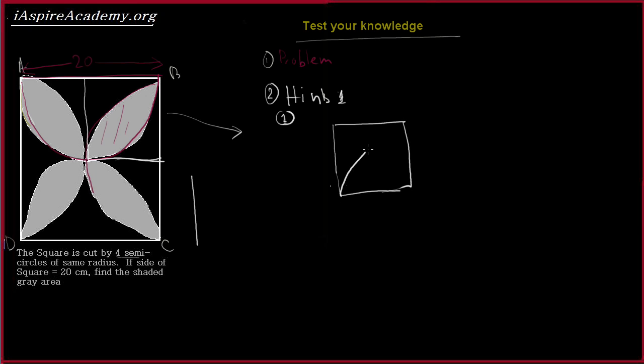And you have 2 semicircles like this. So if you can see these 2, because this is a square and 4 equal centers, these areas would be all same.